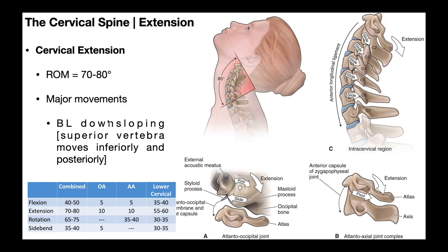Downsloping is the exact opposite of upsloping. The superior vertebra now moves inferiorly and posteriorly relative to the vertebra below, instead of superiorly and anteriorly. For example, during extension of the cervical spine, C3 would move both inferiorly and posteriorly relative to C4. Similarly, C5 would move inferiorly and posteriorly relative to C6.